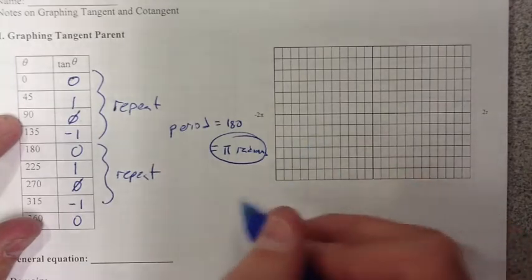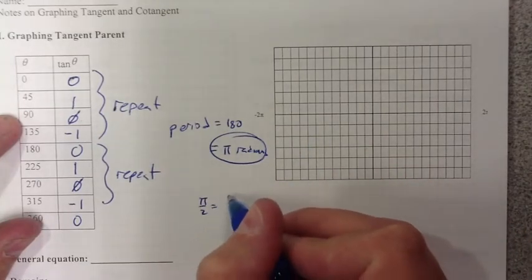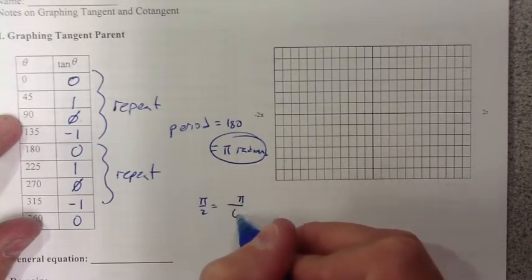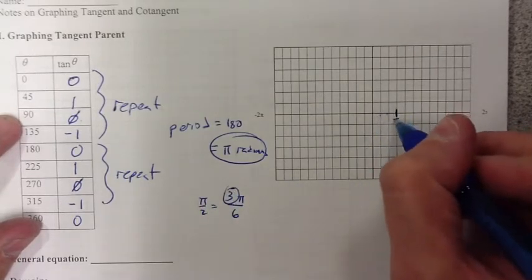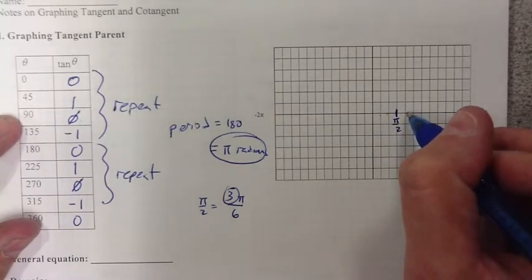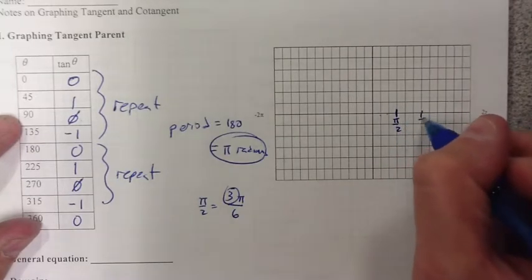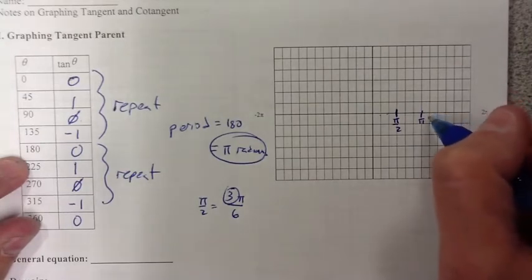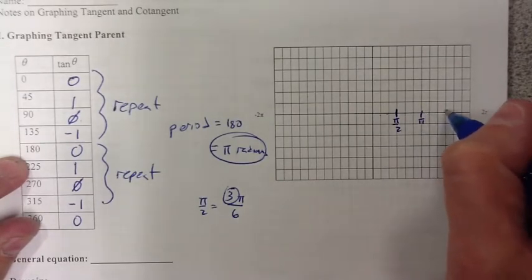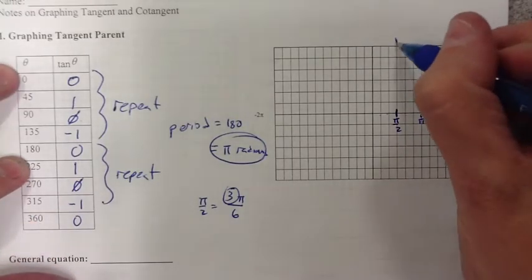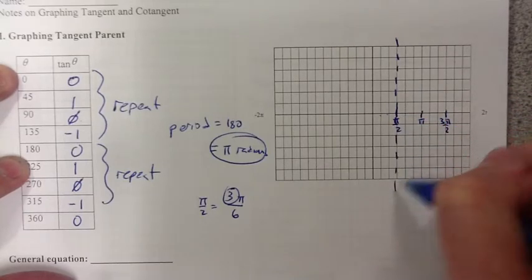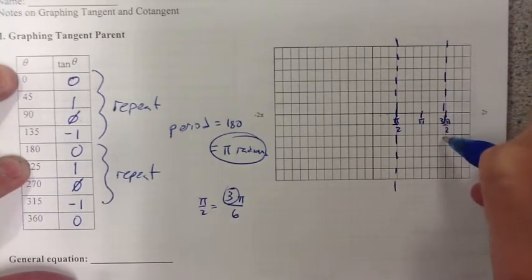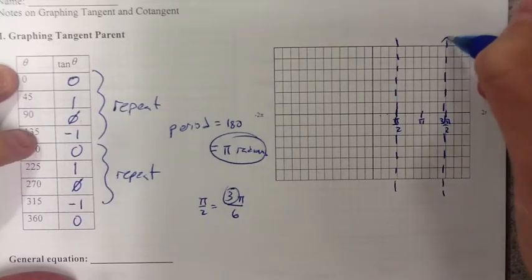Remember π/2, since we're counting by π/6's, becomes 3. So we're going to count over 3 - here's π/2. Then that's π, but remember π does have a value at 0 there. Here's 3π/2. So tangent is going to have asymptotes at π/2's.